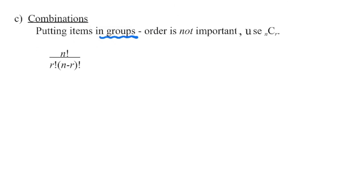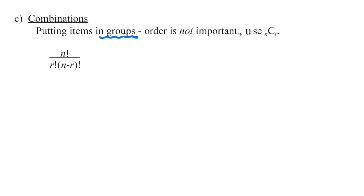Finally, if the order does not matter and we are choosing groups of objects, then we can use combinations — nCr. How many objects do we have available, putting them into groups of how many. Combination notation is represented by the formula where we arrange all objects, divide out those we're not using, and because order doesn't matter, we also divide out the arrangements of the objects we are using.